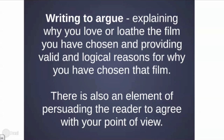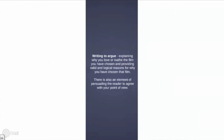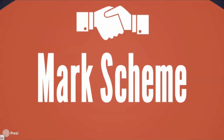So what is writing to argue? In this case, specifically the film question, it's explaining why you love or loathe the film you've chosen, but you've got to provide valid and logical reasons for why you feel that way. There is an element of persuading the reader to agree with your point of view, but it differs from writing to persuade in that you have to acknowledge there is another side to the argument. The mark scheme for this controlled assessment task and for the writing tasks on the AQA GCSE English and English Language papers are essentially the same.